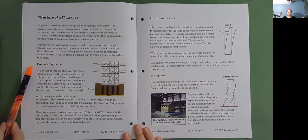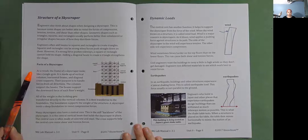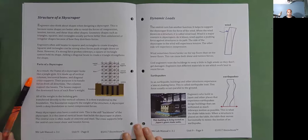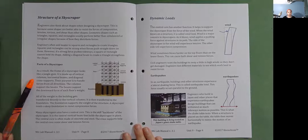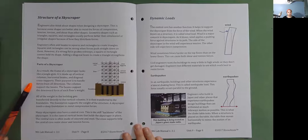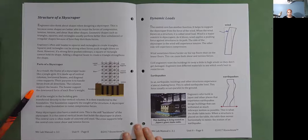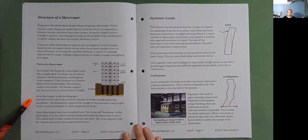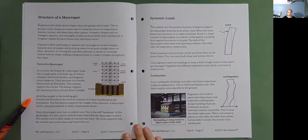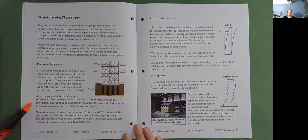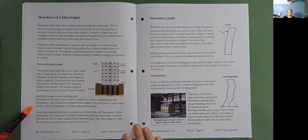Parts of a skyscraper. As a result, the frame of a skyscraper looks like a jungle gym. It is made up of vertical columns, horizontal beams, and diagonal cross supports. Their purpose is to handle forces from all directions. The columns support the beams. The beams support the downward force of each floor's weight. All of the weight in the building gets transferred directly to the vertical columns. It is then transferred to the foundation. The foundation supports the weight of the structure. A skyscraper needs a deep foundation to resist compression forces.